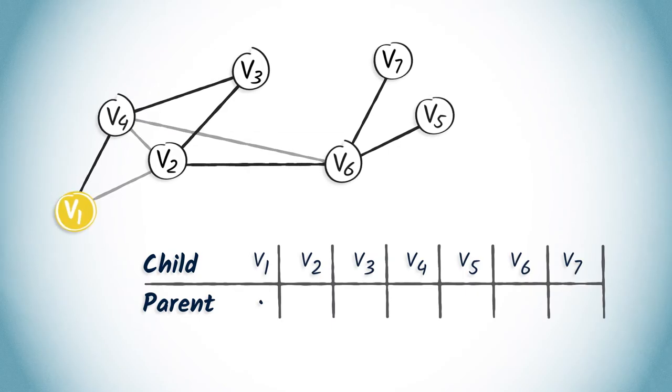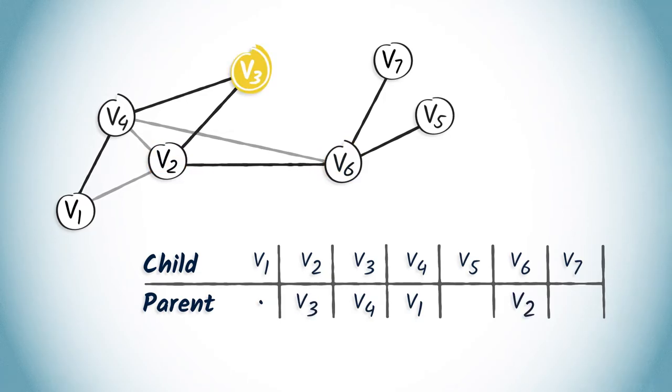V1 has only one child vertex, V4. So we add V1 in the column corresponding to V4. V4 only has one child, V3. So we add V4 in the column of V3. Now let's simply apply the same principle to vertices V2 and V6, which are the only children of V3 and V2 respectively.